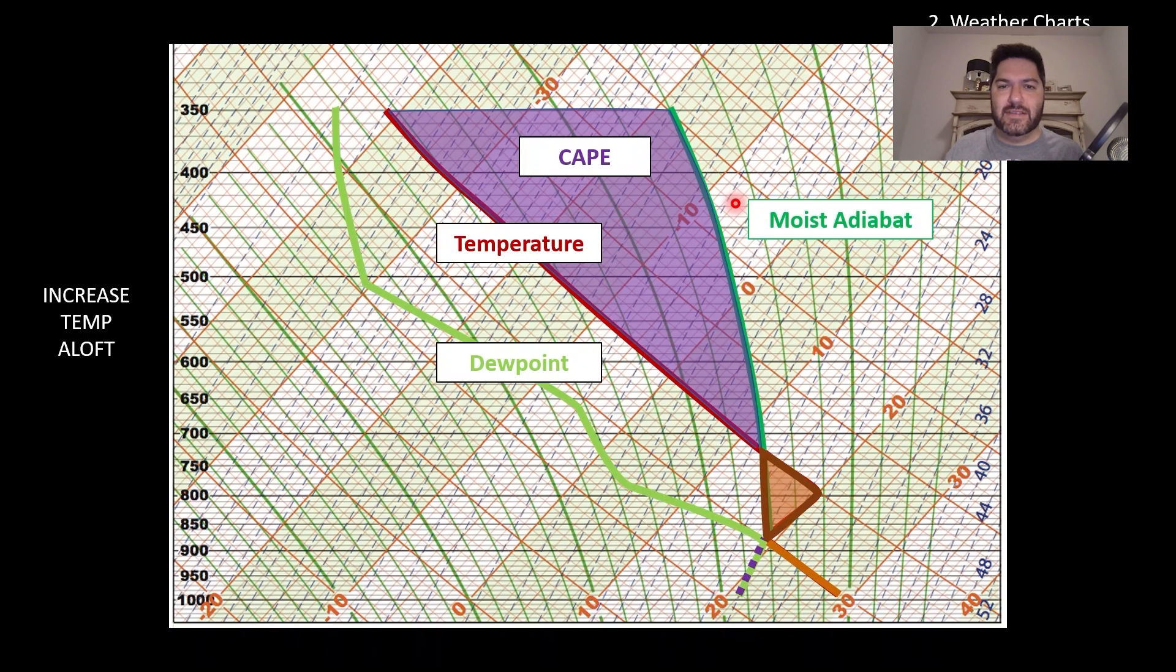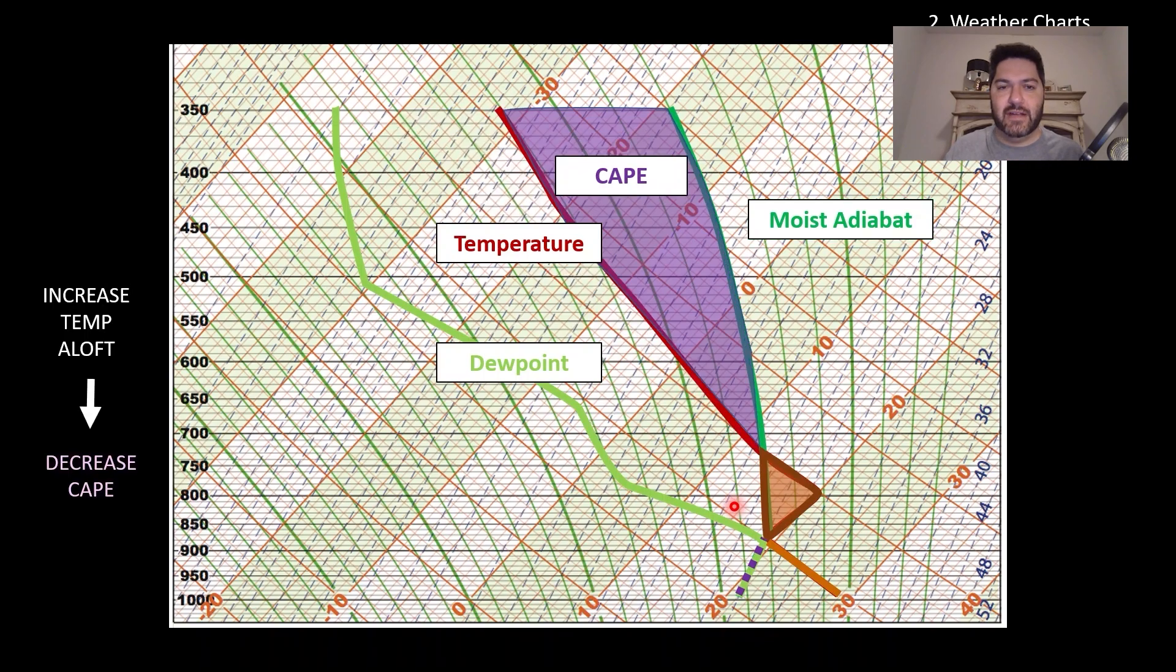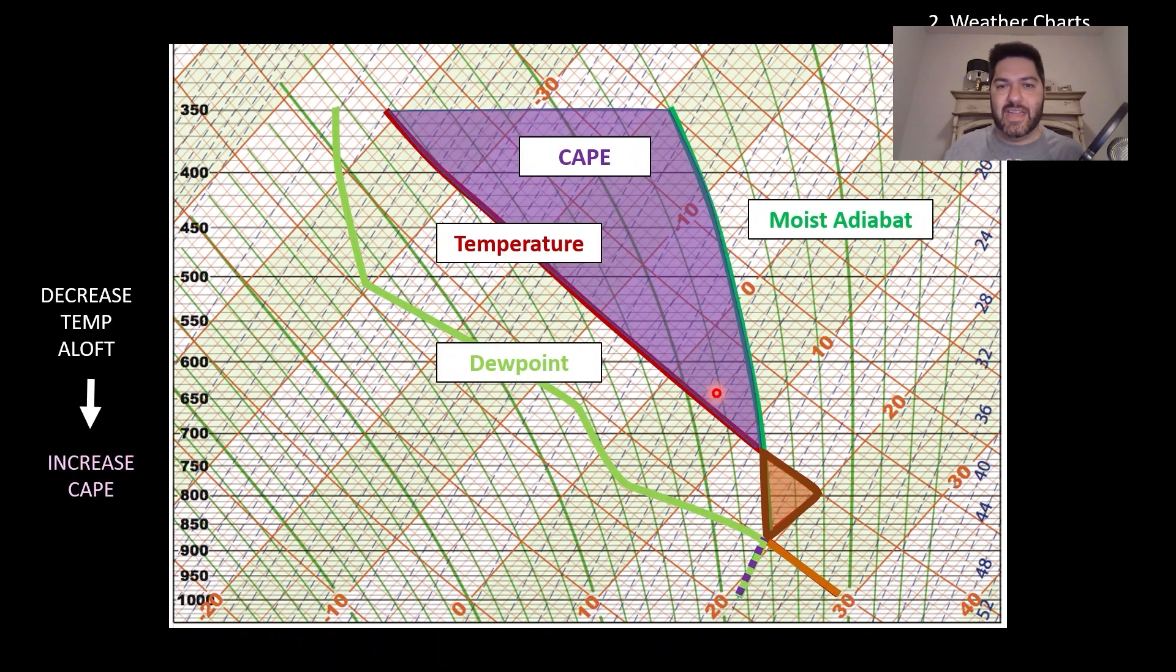So what happens if you increase the temperature aloft? This is the temperature line, the environmental temperature. What happens when you increase that? Well, it turns out that you actually decrease that area. So that decreases CAPE. You decrease the amount of energy you have for updrafts. What happens if you decrease that temperature aloft? You move that red line to the left? Well, you increase CAPE.